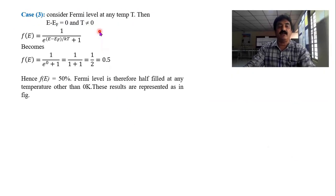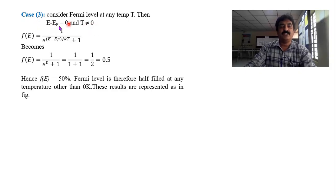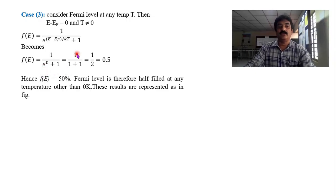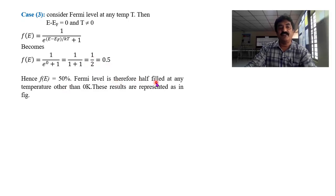Last case: I take some temperature other than 0, and the energy level corresponds to the Fermi level itself, so E = EF, meaning E minus EF = 0. The exponent becomes e^(0/kT) = e^0 = 1. So F(E) = 1/(1+1) = 1/2 = 0.5. That means the Fermi level is 50% occupied — half filled, half vacant.